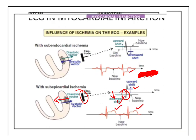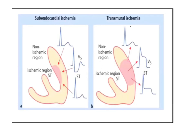To summarize: whenever there is subendocardial ischemia, we always get ST depression; whenever there is subepicardial ischemia or transmural ischemia, we get ST elevation. In subendocardial ischemia we get ST depression, and in transmural or epicardial ischemia we get ST elevation.